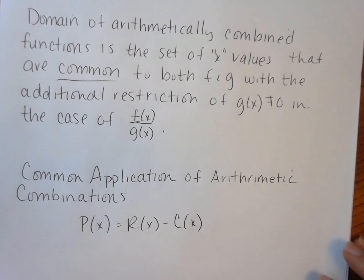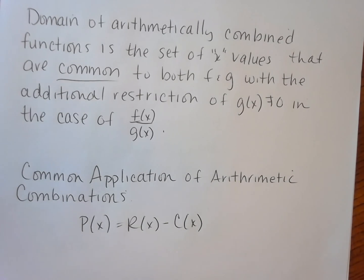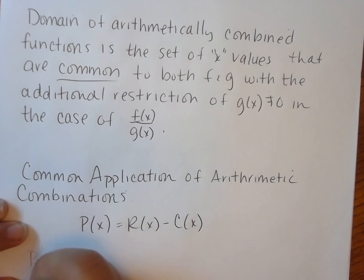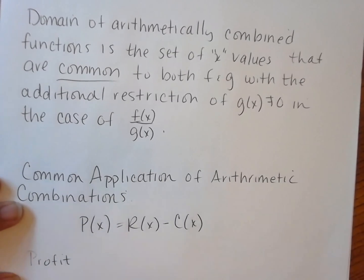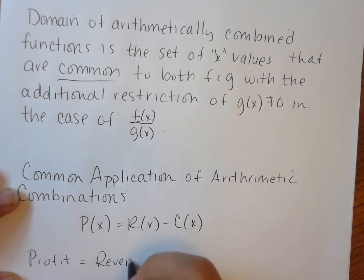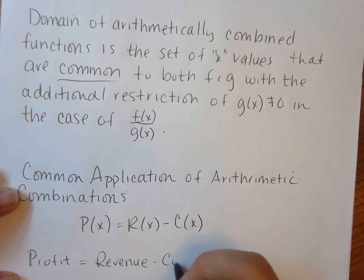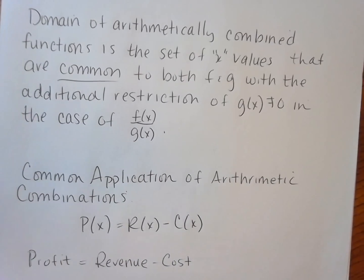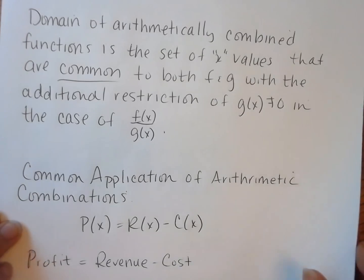One common application of arithmetic combinations is p(x) = r(x) − c(x). If you've taken an economics class, you might recognize this as a profit function. We name it p(x) for ease — profit equals revenue minus cost. This is one arithmetic combination we use quite often.